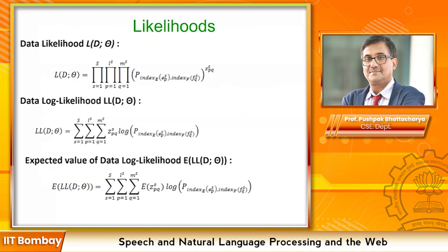Now the data likelihood can be expressed as follows. We are interested in the probability of Index_E(ESP) and Index_F(FSQ) raised to the power Z_SPQ — where Z_SPQ is called the indicator variable. The data likelihood is the probability of the dictionary correspondence raised to the indicator variable, indicating correspondence between the P-th English word and the Q-th French word in a sentence pair. Multiplying over Q from 1 to MS, P from 1 to LS, and over all sentences S from 1 to capital S gives the data probability in terms of parameters P and hidden variable Z.